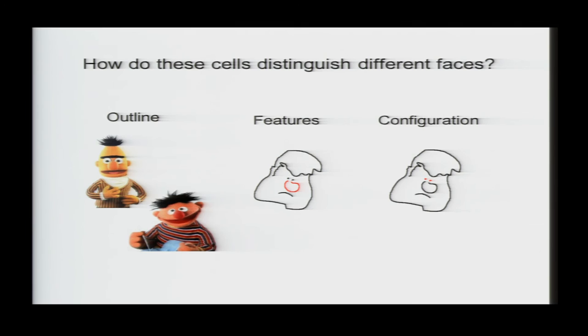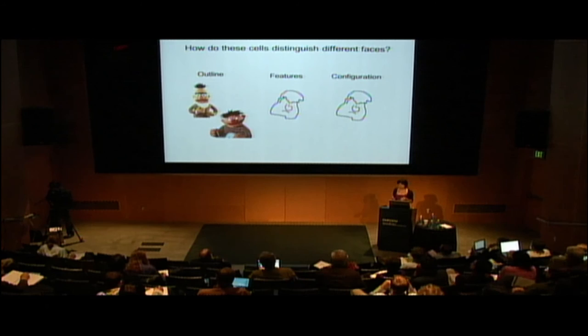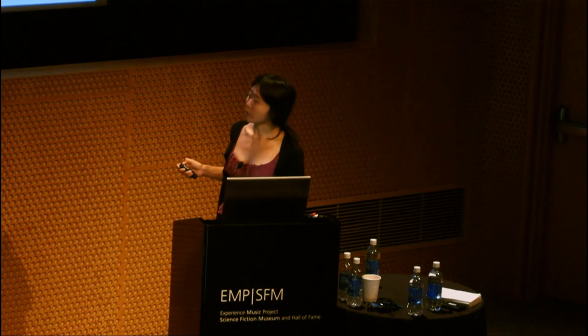So, now that the brain has detected a face, how does it distinguish different faces? And in general terms, it could do so based on the outline of the face, based on the shape of specific features, or based on the spatial relationship between features. And to distinguish these possibilities, again, we took advantage of cartoon faces, and we generated this cartoon face space consisting of 20 different dimensions, and each parameter could take one of 11 values, and some of the dimensions describe the overall shape of the face, like the aspect ratio. Some describe the shape of specific features, like the irises, and some the relationship between features, like inter-eye distance.